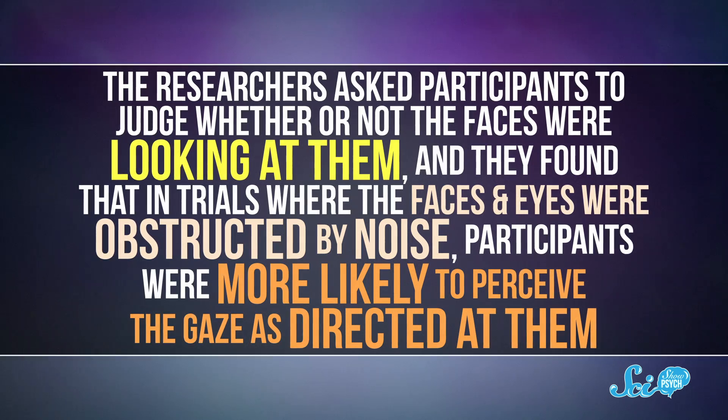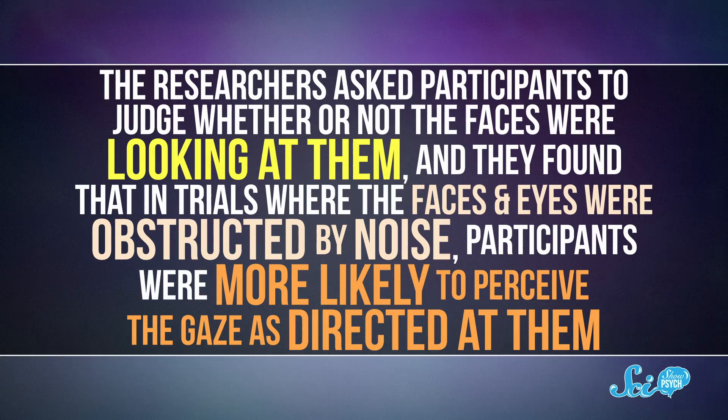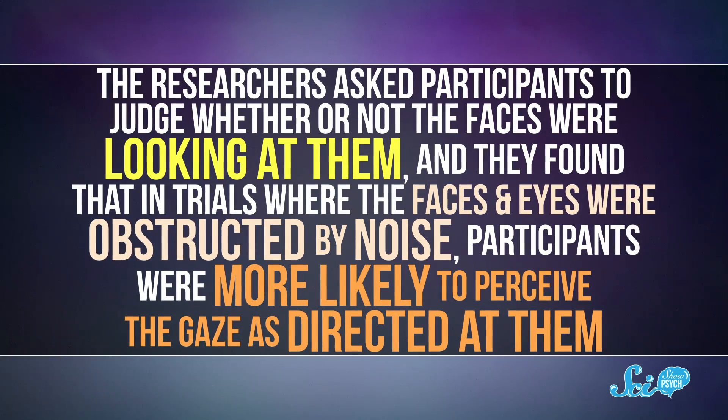The researchers asked participants to judge whether or not the faces were looking at them. And they found that in trials where the faces and eyes were obstructed by noise, participants were more likely to perceive the gaze as directed at them. In real life, the scientists took this to mean that in situations where you can't know where people are looking, like when it's dark,